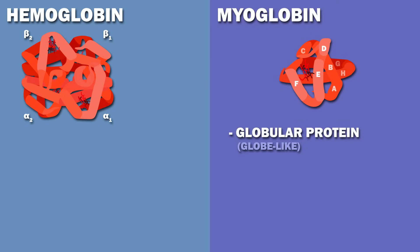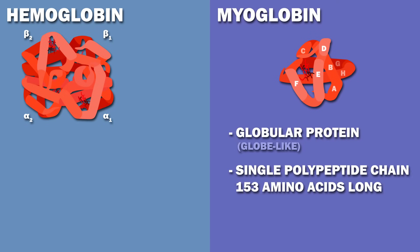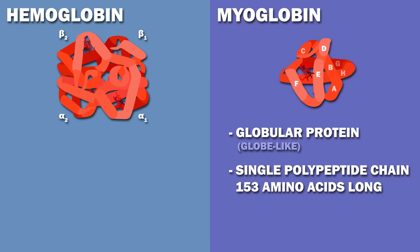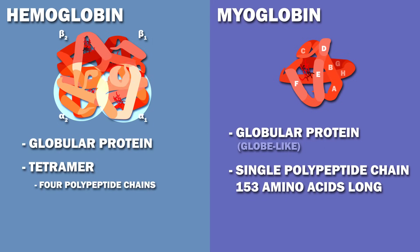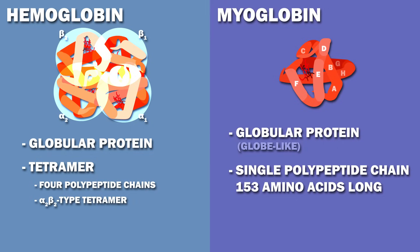Myoglobin is a globular protein made up of a single polypeptide chain 153 amino acids long. Hemoglobin is also a globular protein, roughly spherical in shape, but it is a tetramer composed of four polypeptide chains. Specifically, hemoglobin is an alpha 2 beta 2 type tetramer, meaning it has two identical alpha chains and two identical beta chains.